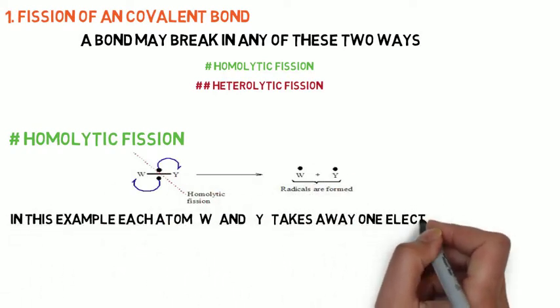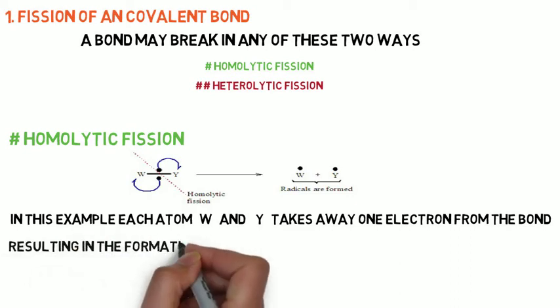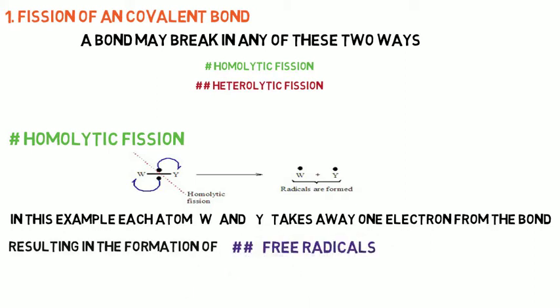In the example stated, each atom W and Y takes away one electron from the bond resulting in the formation of free radicals.